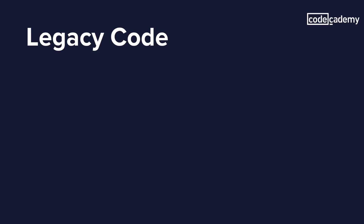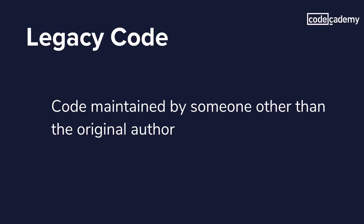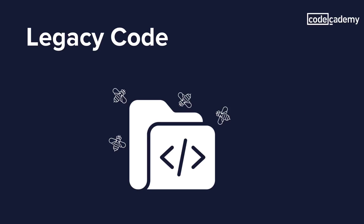The basic definition of legacy code is that it's any code that's maintained by someone other than the original author. This is the traditional definition, and the one you're going to hear most often. But over the years, legacy code has really become one of those buzzwords that everyone in the industry is using, and because of that, the term has taken on a lot of other definitions.